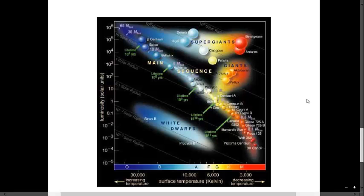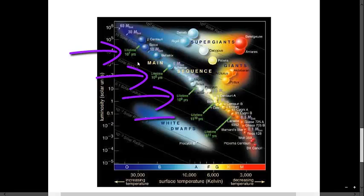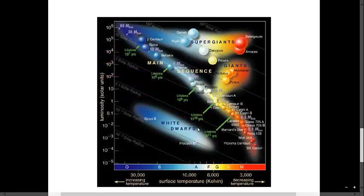Additionally, this HR diagram shows the approximate lifespan of each star type, which is based on the temperature in the core. Hotter stars burn or fuse the hydrogen in their core faster than cooler stars. Hotter stars like blue main sequence stars can be on the main sequence for tens or hundreds of millions of years.